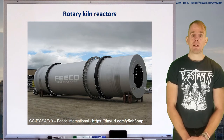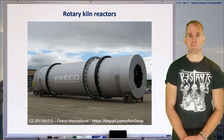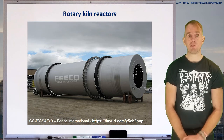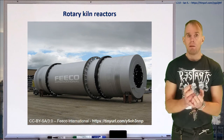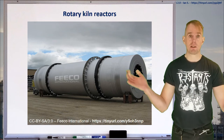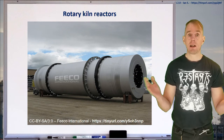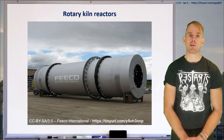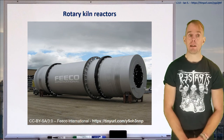Rotary kiln reactors are commonly used where you have very high solid concentrations in multiphase reactors. You need to keep them constantly rotating, because if you lose power and they stall — since they're heated to very high temperatures — they can warp. The last thing you want is your reactor warping under its own self-weight, especially if it happens to be made of a high-nickel alloy. That would effectively write the plant off, because the capital cost of replacement would render it uneconomically viable.